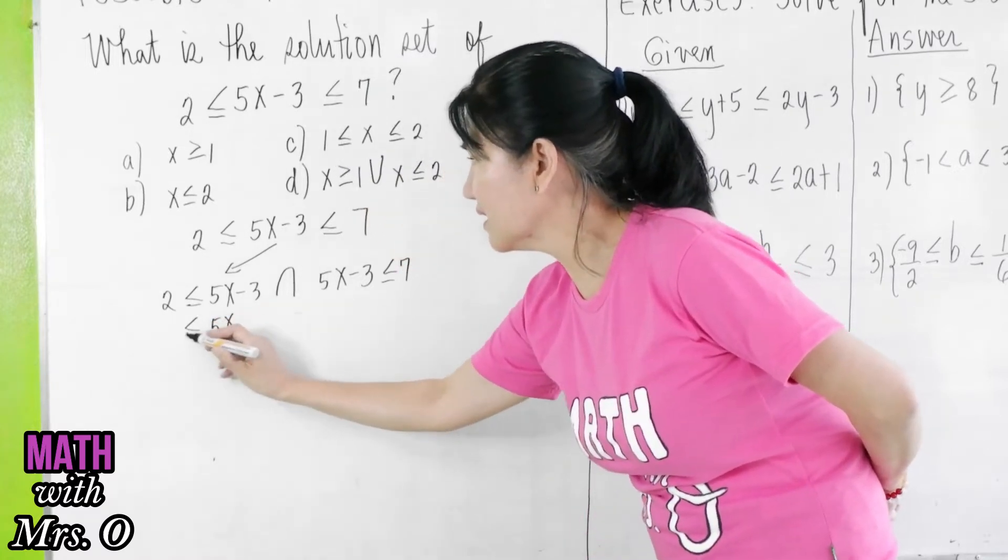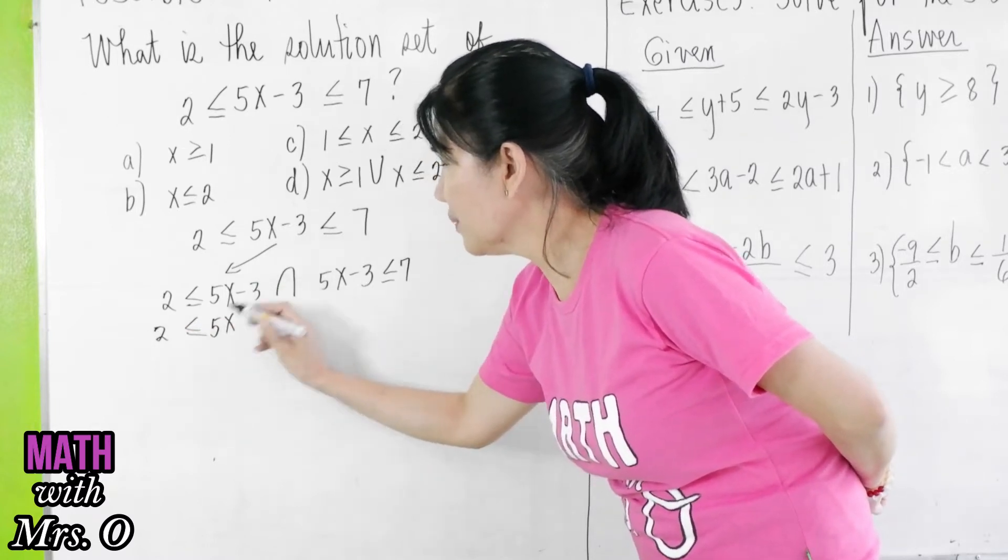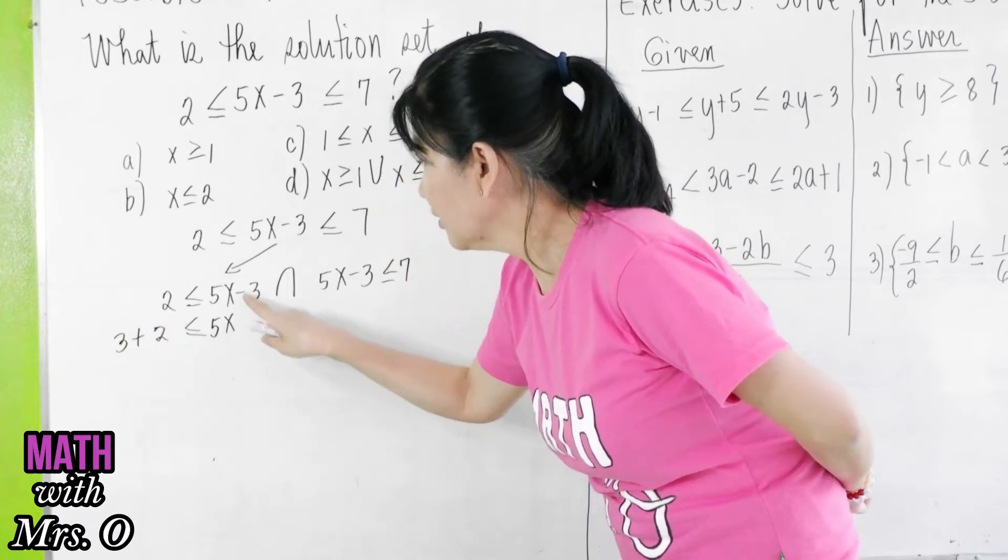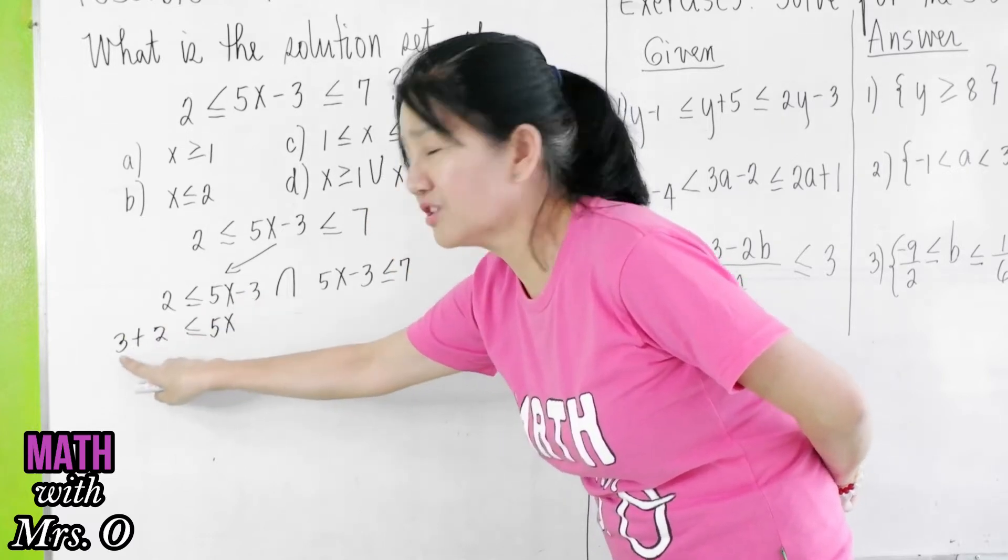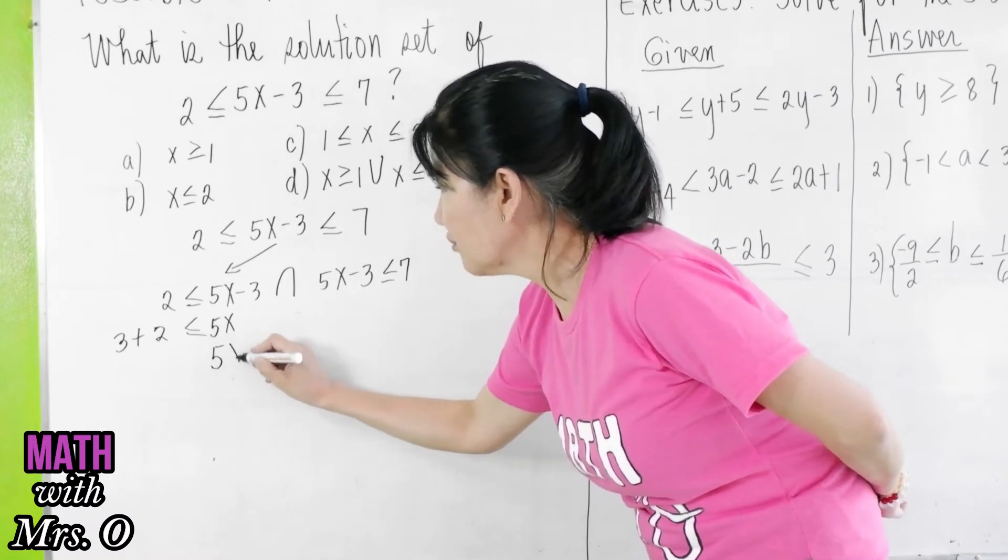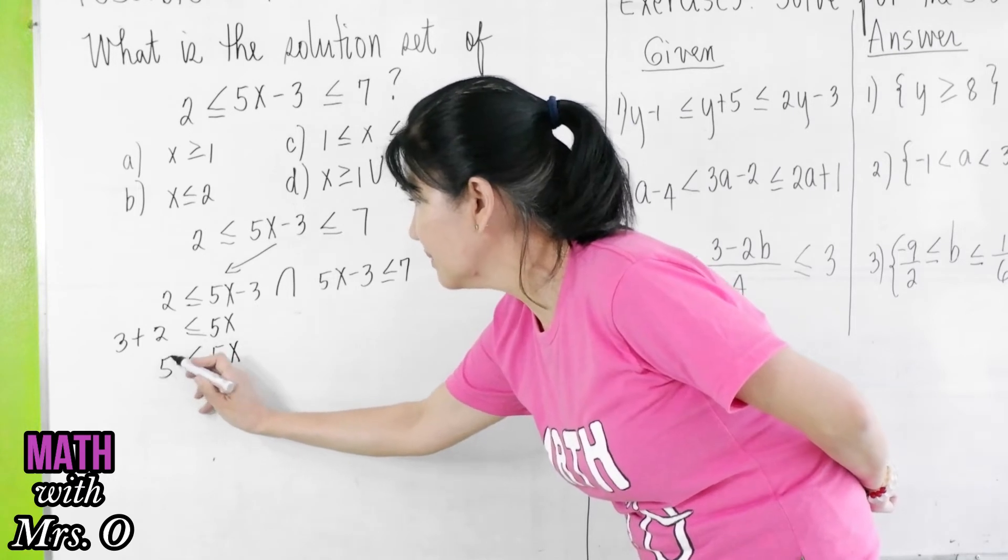5x is greater than or equal to 2. Transpose negative 3, so you add plus 3. You transpose negative 3 to the other side, it becomes positive 3. So, 5x is greater than or equal to 5.